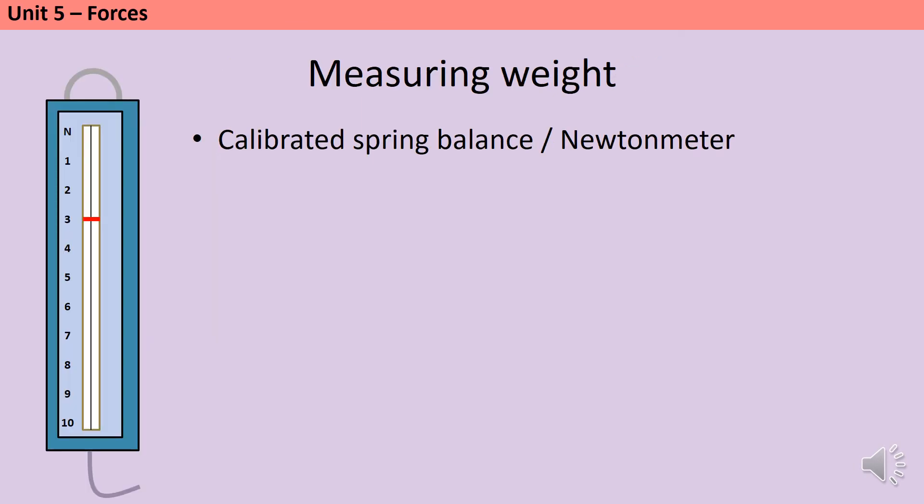Weight can be measured using a piece of equipment called a calibrated spring balance, or a newton meter. This contains a spring, which stretches as a larger force is applied. So, you would hang something off the end of the hook here, and the heavier it is, the more that spring will stretch. This causes a marker to move, my little red line here, and that allows us to read off what the size of the force is. An object with a bigger mass also has a bigger weight, so it would trigger a bigger reading on the newton meter.